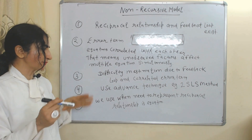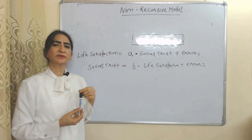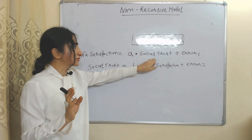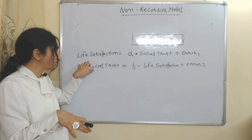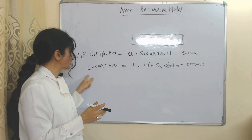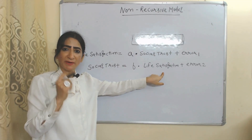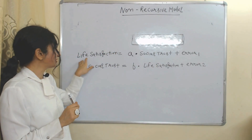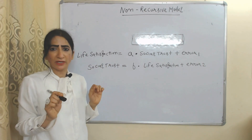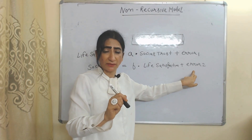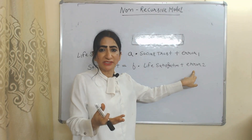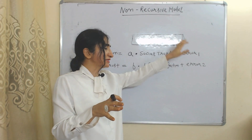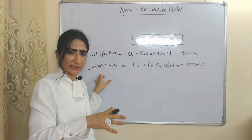We use the non-recursive model when we need to represent reciprocal relationships in equations. Here is an interesting example: life satisfaction is the dependent variable and social trust is the independent variable in the first equation. In the second equation, social trust is the dependent variable and life satisfaction is the independent variable. So life satisfaction and social trust have a reciprocal relationship. The error terms E1 and E2 are correlated, meaning unobserved factors influencing both variables are related.